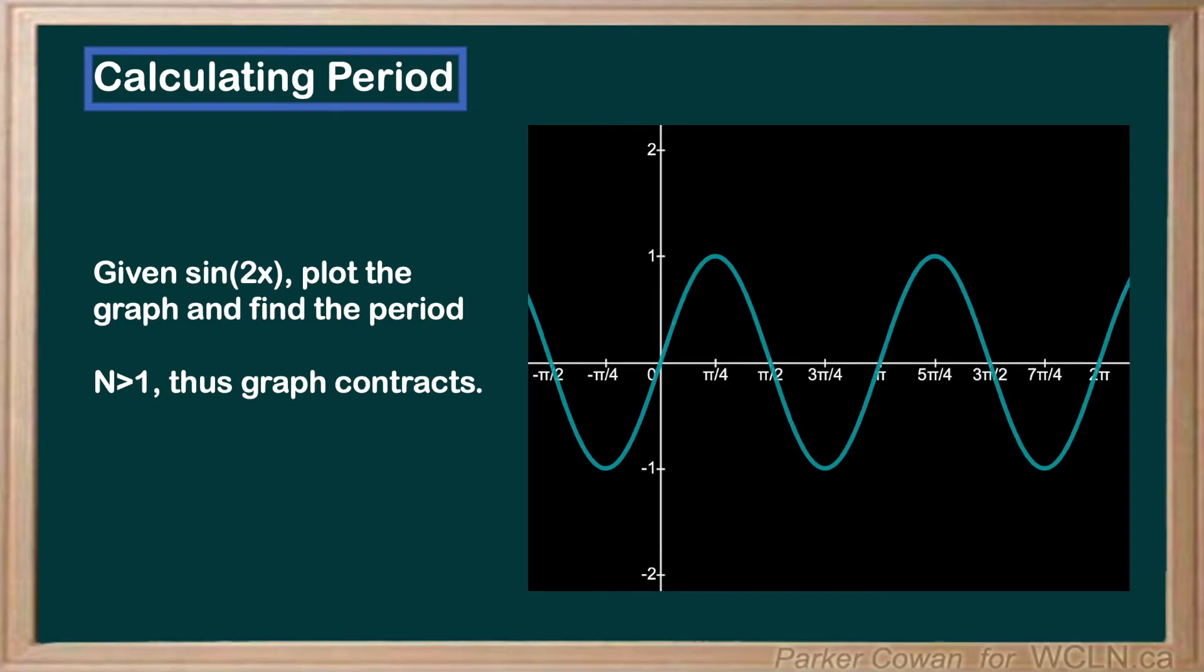To find the period, we just need to find the smallest non-repeating chunk of the wave. Since we shrank the graph by a factor of 2, and our period is originally 2π, it makes sense that our new period will now be 2π over 2, which is just π. We can see that on the graph as well.